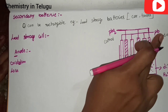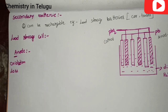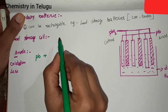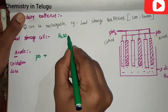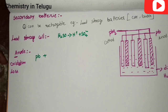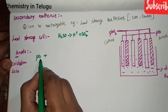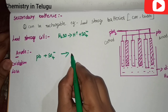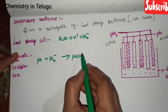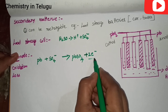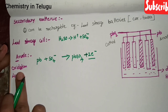At the anode, lead (Pb) is present. The anode process involves lead reacting with H₂SO₄. H₂SO₄ dissociates into H⁺ and SO₄²⁻ ions. Lead reacts with SO₄²⁻ to form lead sulfate (PbSO₄), releasing two electrons. This confirms it is oxidation at the anode.